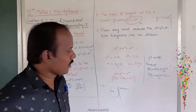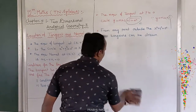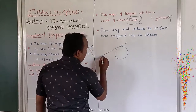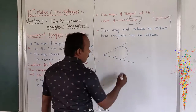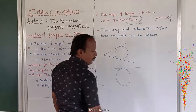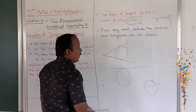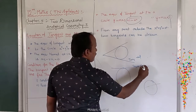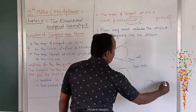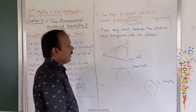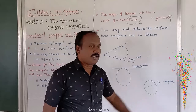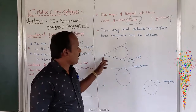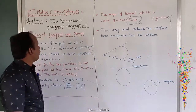From any point outside the circle x² + y² = a², two tangents can be formed. If the point is on the circle, the two tangents coincide. If the point is inside the circle, the tangents are imaginary. So: outside the circle — tangents are real; on the circle — tangents coincide; inside the circle — tangents are imaginary.